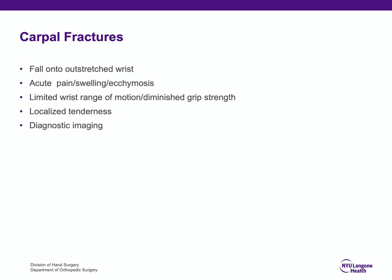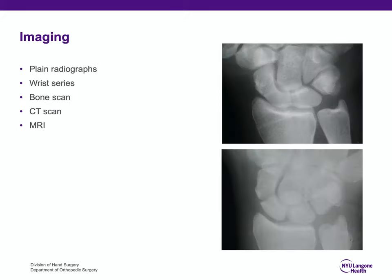After history and physical examination, that leads us to proper diagnostic imaging. Diagnostic imaging can range from plain radiographs — PA, oblique, and lateral — a wrist series, and radial and ulnar deviation views.